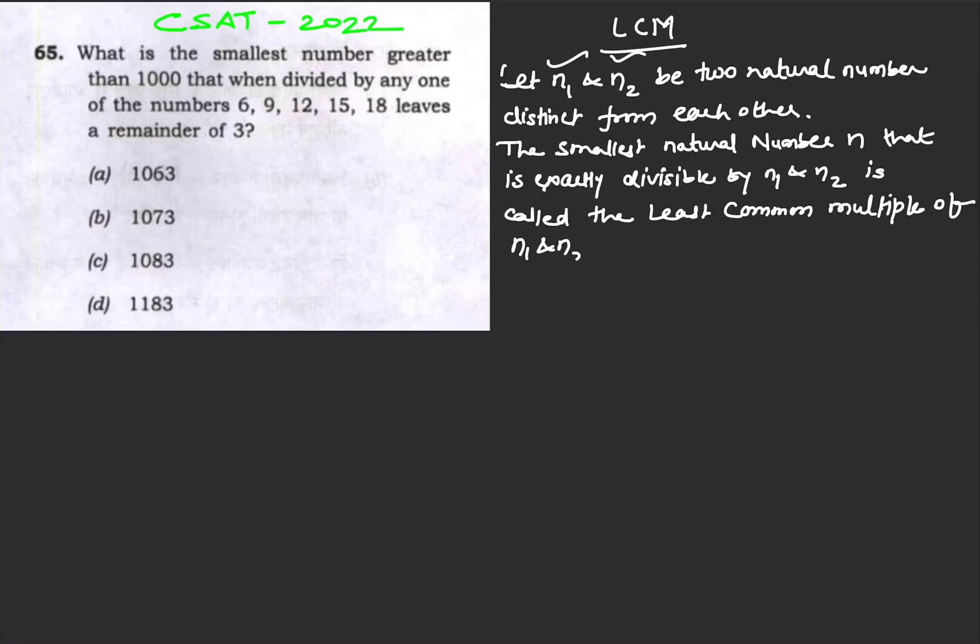Hello everyone, welcome to Optimize IAS. We are solving the previous year question paper CSAT 2022. This is a CSAT series on quant. Here is the question: what is the smallest number greater than 1000 that when divided